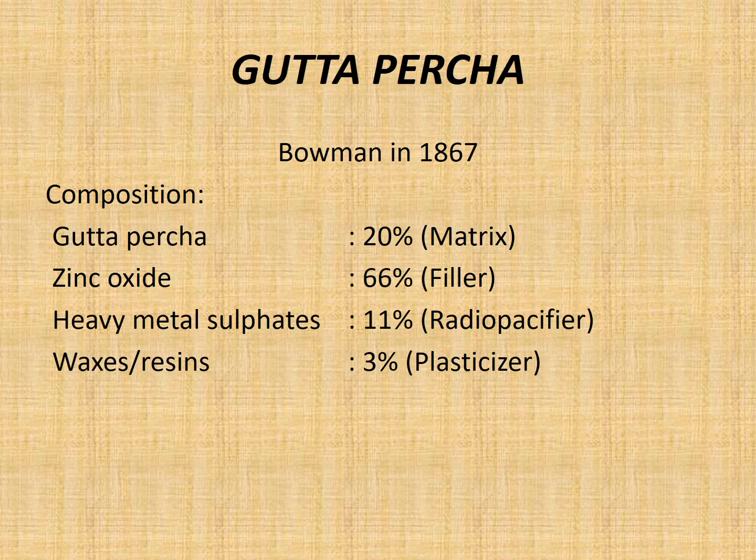Now moving on to the material which is most widely and popularly used as core material in root canal treatment — gutta-percha. This material was introduced into dentistry by Bowman in 1867. The composition of gutta-percha is: gutta-percha itself is about 20% and acts as a matrix. Zinc oxide, which is the major constituent, is about 66% and acts as a filler. Heavy metal sulphates are used at about 11% to provide radiopacity, allowing us to appreciate the root canal filling on radiographs. Waxes and resins are about 3%, acting as a plasticizer.